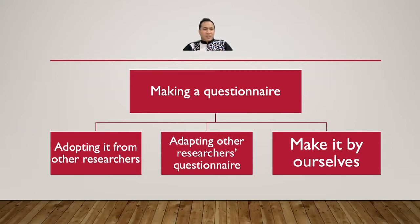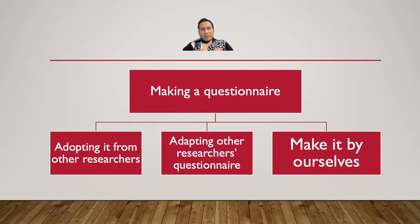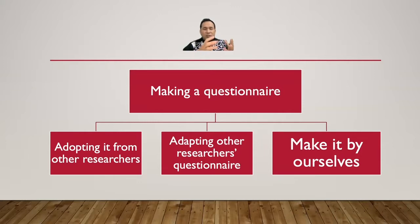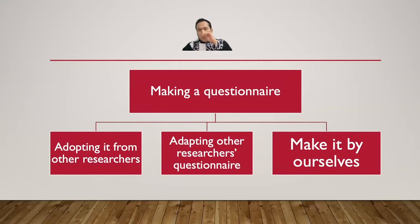When you adopt, you take the questionnaire for granted — you take all the parts from other researchers' questionnaires. Adapting means you take some parts but add additional items. You make modifications, still using parts of others' questionnaires, but also putting in some additional items of your own.